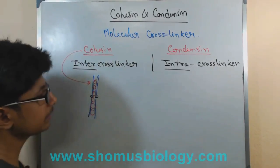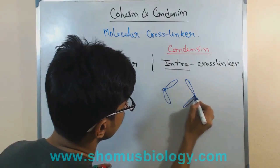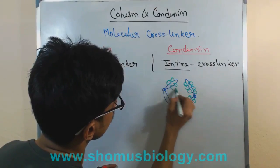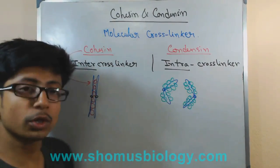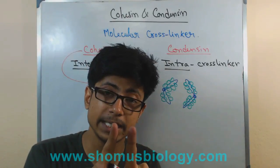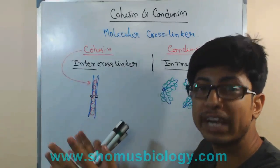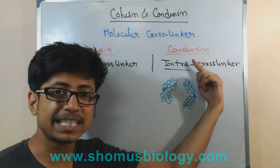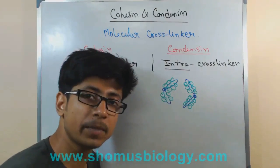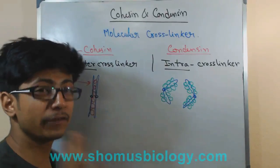Now, what is the function of condensin? Condensin, let's say, is shown in green color here. Two different sister chromatids are linked together with cohesin — so it is an interaction between two separate chromatids, that's why we call it an inter cross-link. In contrast, condensin is attached within the same chromatid — it is inside the same chromatid. That's why it's called an intra cross-linker. Intra means within the same; inter means between two.